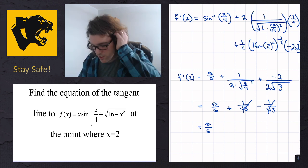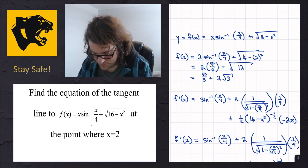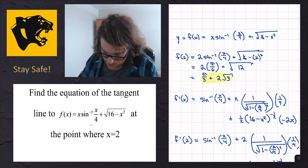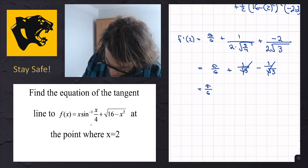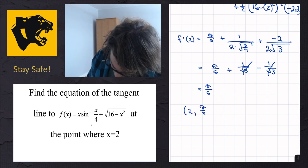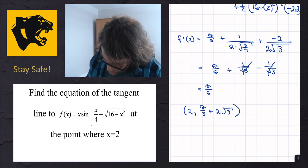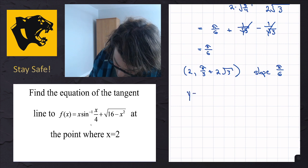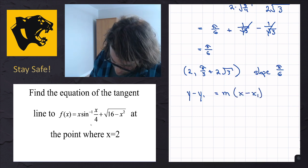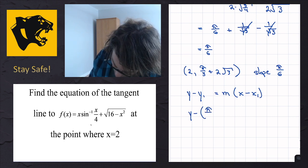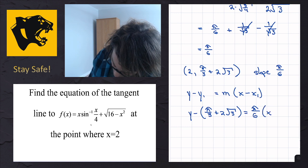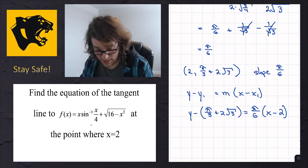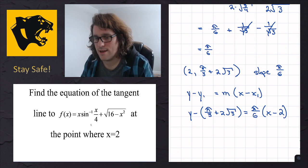We have all the information we need. The slope is π/6, the point is x = 2 and y = π/3 plus 2√3. Using point-slope form: y minus (π/3 + 2√3) equals π/6 times (x minus 2). That's the equation of the tangent line that cuts the function at x equals 2.